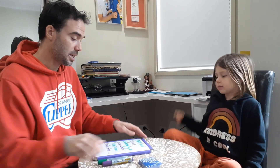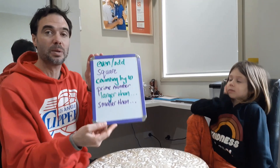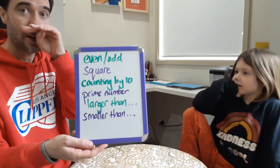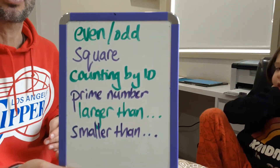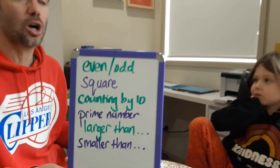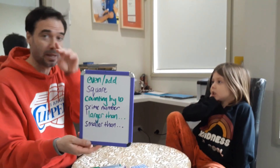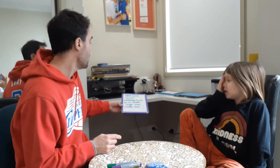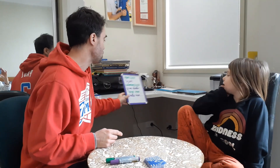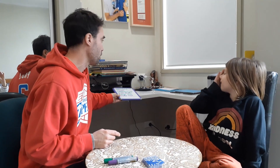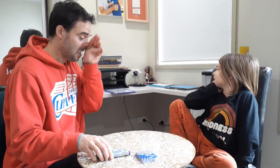Having that list there can help us think of clues while we're playing. Obviously, the words you come up with with your child will depend on the types of mathematical language they're comfortable using. I'll put that list where Nash can look at it while we're playing to help think of clues.